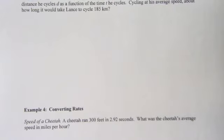Find Lance's unit rate which is his average speed. And then we have to write a rule to describe the distance he cycles D as a function of time T that he cycles, cycling at his average speed about how long would it take for Lance to cycle 185 kilometers.